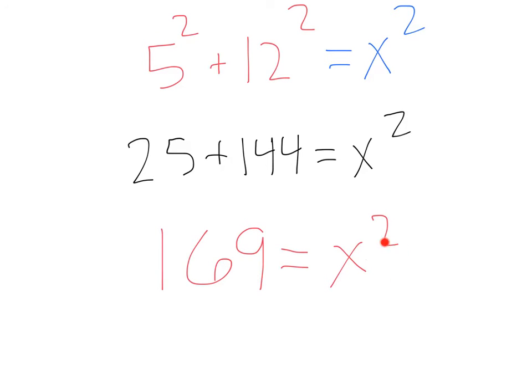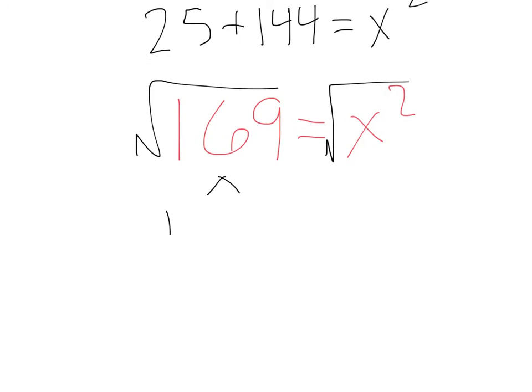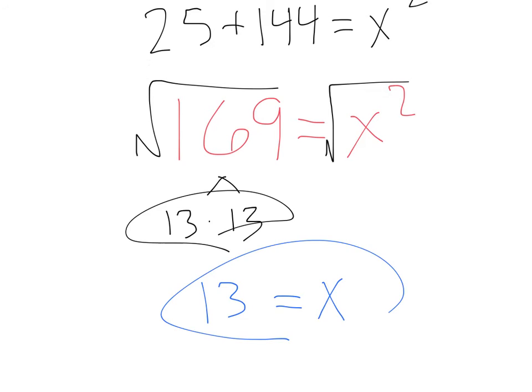Now, in order to solve for this X squared here, we want to take the square root of both sides because, remember, the square root is the opposite of an X squared. So, if I square root this side and I square root this side, I can find out the square root of 169. That's going to be 13 times 13. So, my X is going to equal 13. Boom.